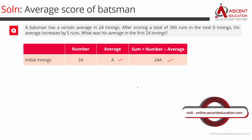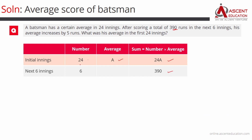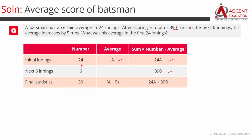The next innings — 6 innings — he scored 390 runs. So the ending total innings is 24 plus 6, which is 30 innings. For all 30 innings combined, he would have scored 24A plus 390 runs.